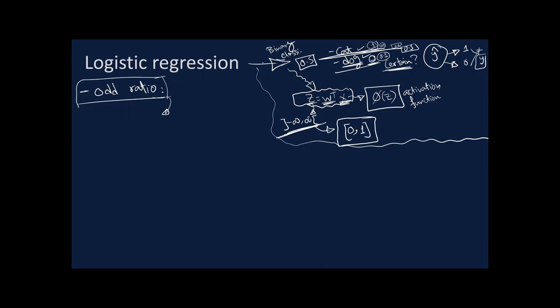This is still different from what we need. We want to take z, which ranges from minus infinity to infinity, and map it to a probability. The odd ratio gives us 0 to infinity — so we need to manipulate it further. Our goal is to map the continuous z value from minus infinity to infinity into a probability ranging from 0 to 1.